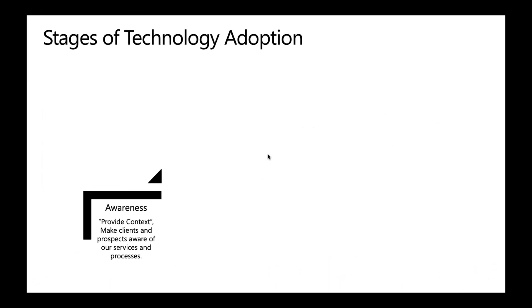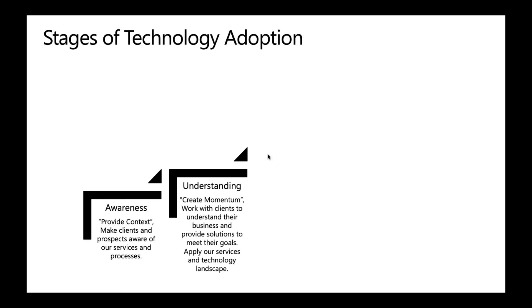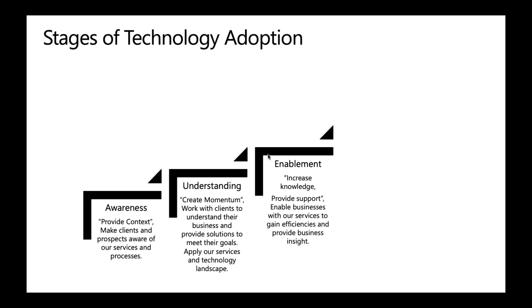The stages of technology adoption we've seen are: first, awareness — what do we want to do and how does the client need to solve this problem, keeping in mind that requirements can and will change. Then we create momentum with clients to understand their business and provide solutions to meet those ever-changing needs. We apply the services and technology landscapes to those needs, and if there's a gap, we work with the client to fill it. Enablement — we want to increase knowledge and provide support so clients can handle whatever comes their way with these new tools. Our goal is to make our clients more enabled with these toolsets.